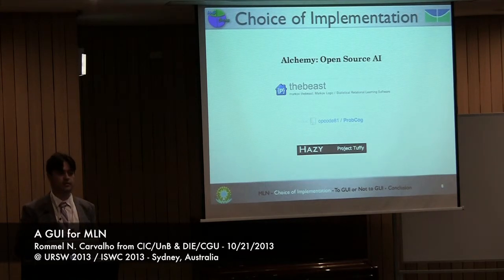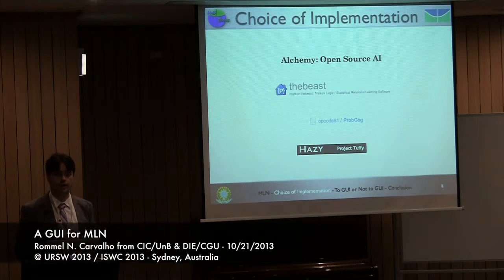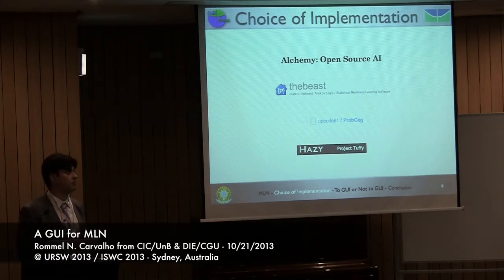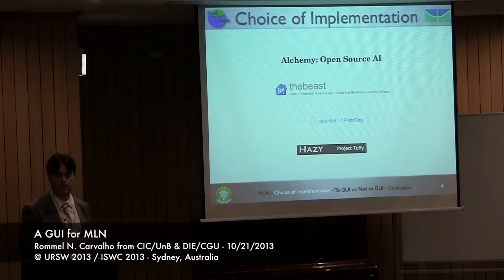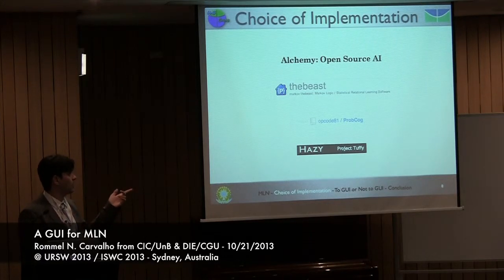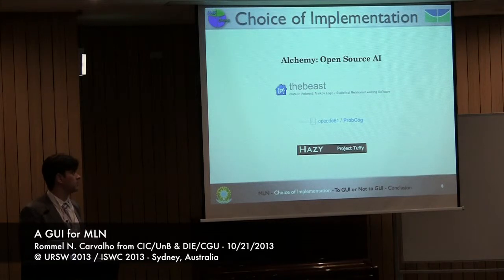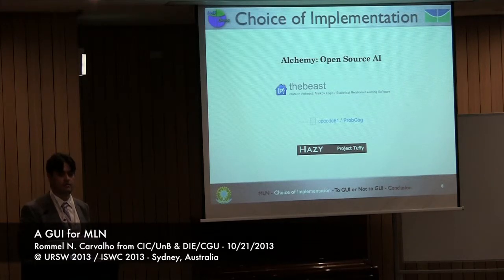We do have Alchemy, which is the standard implementation for Markov Logic Networks. It does tons of things, and from what we could see at the time we chose, it was the most complete one. Then we had Beast and ProCog. Beast is also in Java, but it had very little documentation, so it was hard to actually use the API.